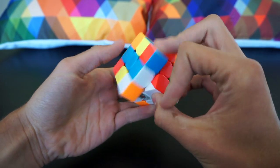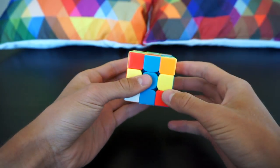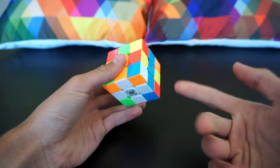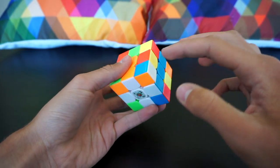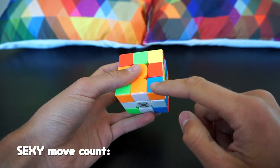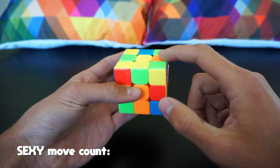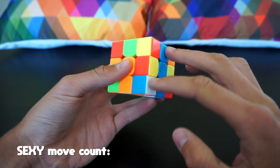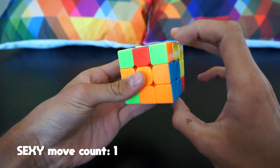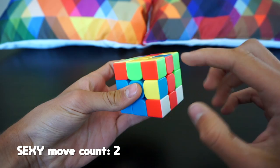Now the fun part starts. Let's count the sexy move count. First of all, we all know that case where we have this color then the adjacent color. We solve this case with two sexy moves. So one, two sexy moves.